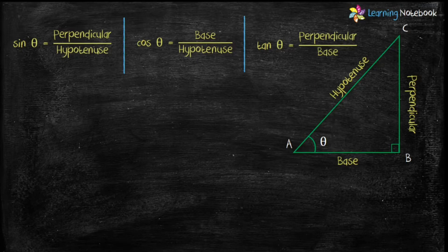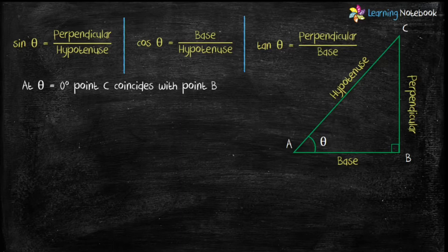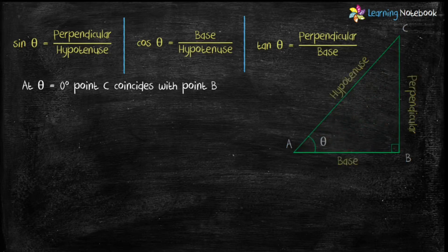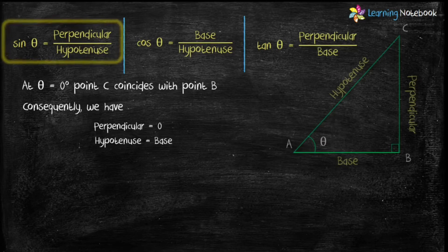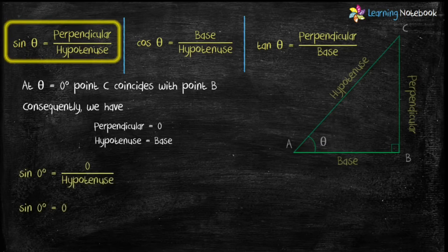Now let's first find the trigonometric ratios of 0°. As theta becomes smaller and smaller, line segment BC also becomes smaller and smaller. Finally, when theta becomes 0°, point C will coincide with point B. Consequently, at theta equals 0°, perpendicular equals 0 and hypotenuse equals base. Putting these values into sin theta equals perpendicular upon hypotenuse, we get sin 0° equals 0.